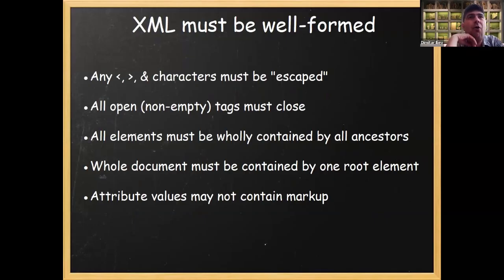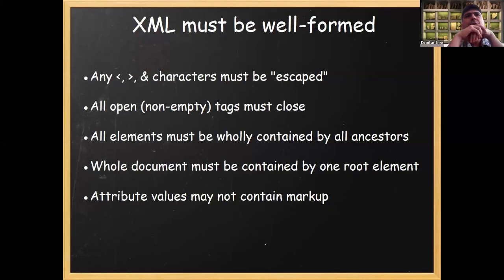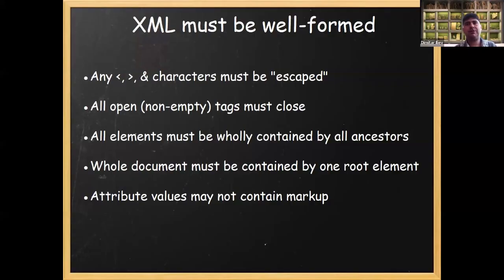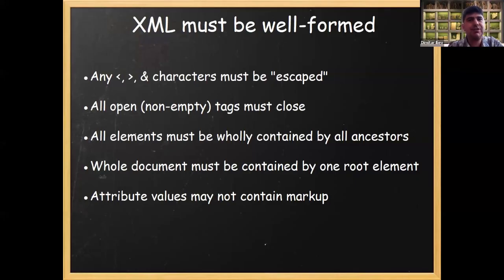Once again about well-formedness: all open tags must close, provided that they are not empty. Any characters such as pointy brackets and the ampersand must not be used — they must be escaped. All the elements must be wholly contained by all ancestors. The whole document must be contained by one root element, which in our case will be TEI, because EpiDoc is a subset of TEI XML. And attribute values may not contain markup, which means that attribute values must be alphanumeric strings — they should consist of only digits and letters of the alphabet.